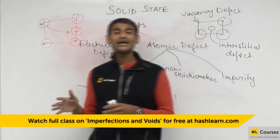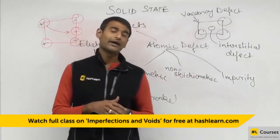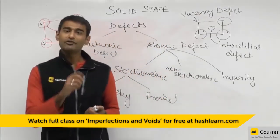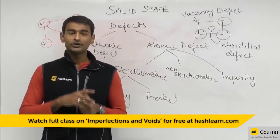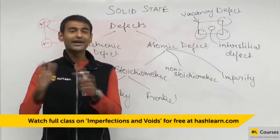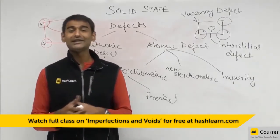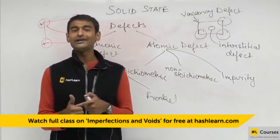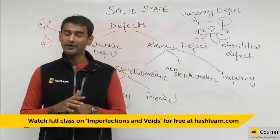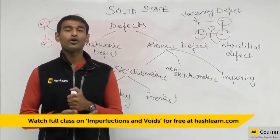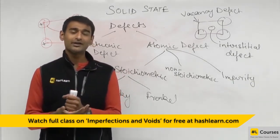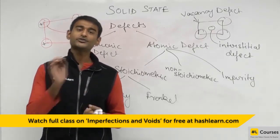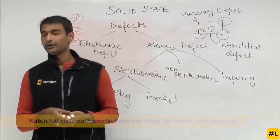If the size of the cation is much smaller than the anion, the cation will come out from its original place and occupy some interstitial position. This is merely a rearrangement, so it will not affect the density, but it will create a vacancy defect and an interstitial defect. This type of defect is called a Frenkel defect, and it happens in those unit cells in which the radius of the cation is much smaller than the radius of the anion.